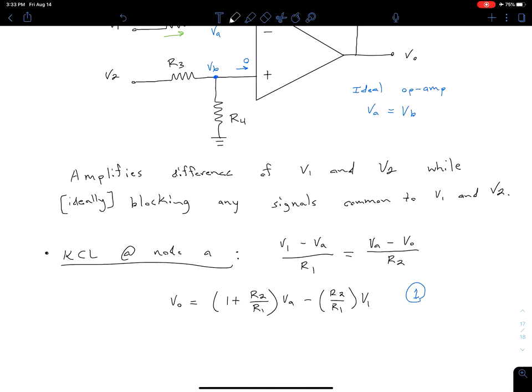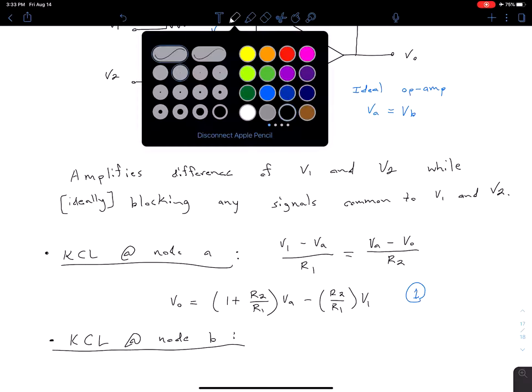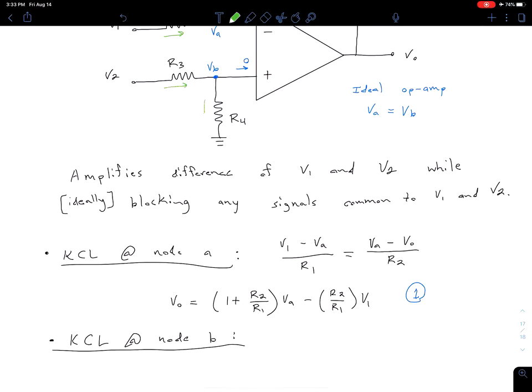Now let's do a similar thing at node B. So KCL at node B. Again, I can explicitly draw on some currents to help. Using those same ideas of node of interest minus adjacent divided by resistor, I can get my equations for these two currents. So I'm going to have V2 minus VB divided by R3 as the current into the node, and then the current out is simply VB divided by R4.